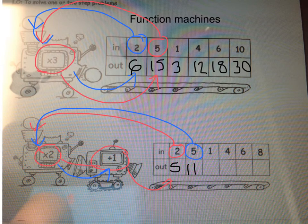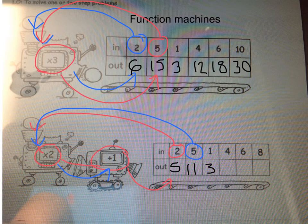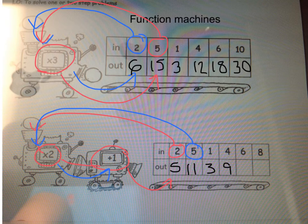1 times 2 is 2. 2 plus 1 is 3. 4 times 2 is 8. 8 plus 1 is 9. 6 times 2 is 12. 12 plus 1 is 13. And 8 times 2 is 16. 16 plus 1 is 17.